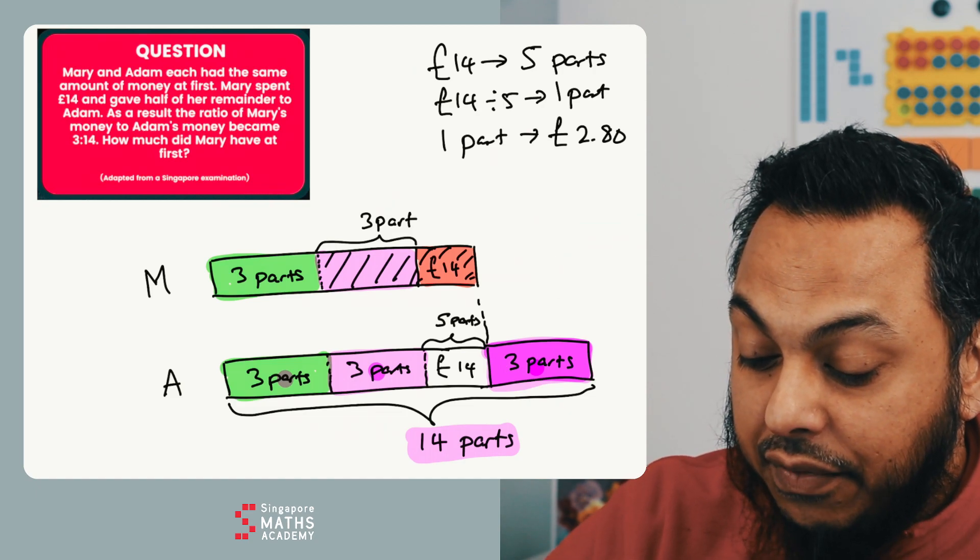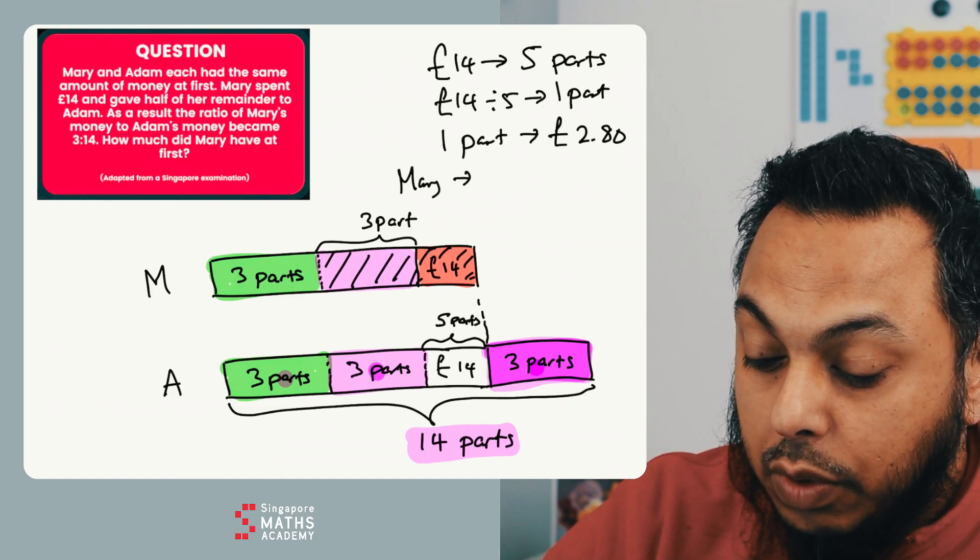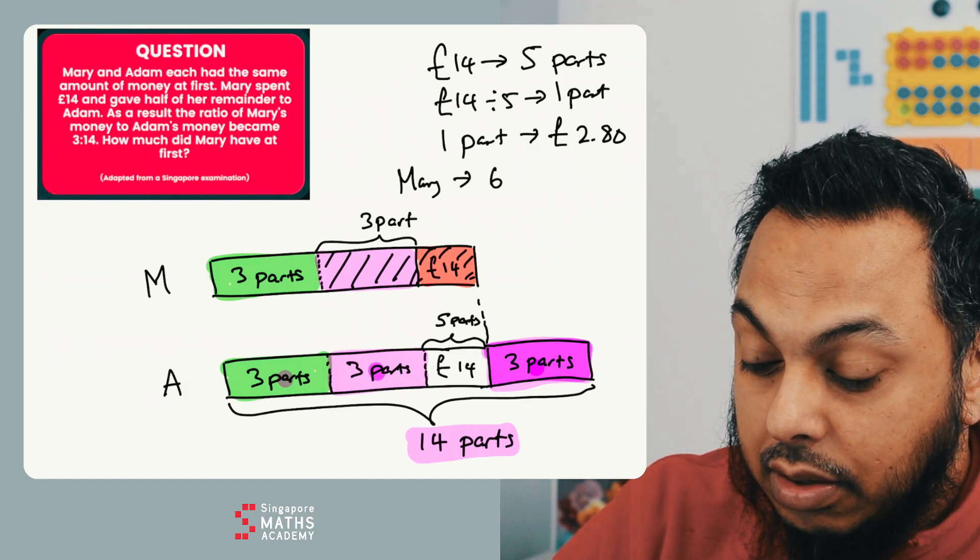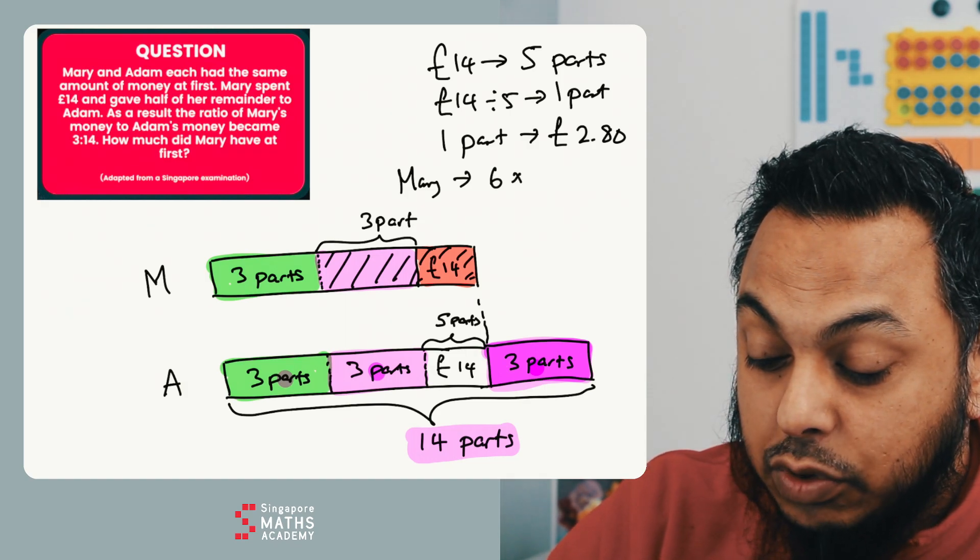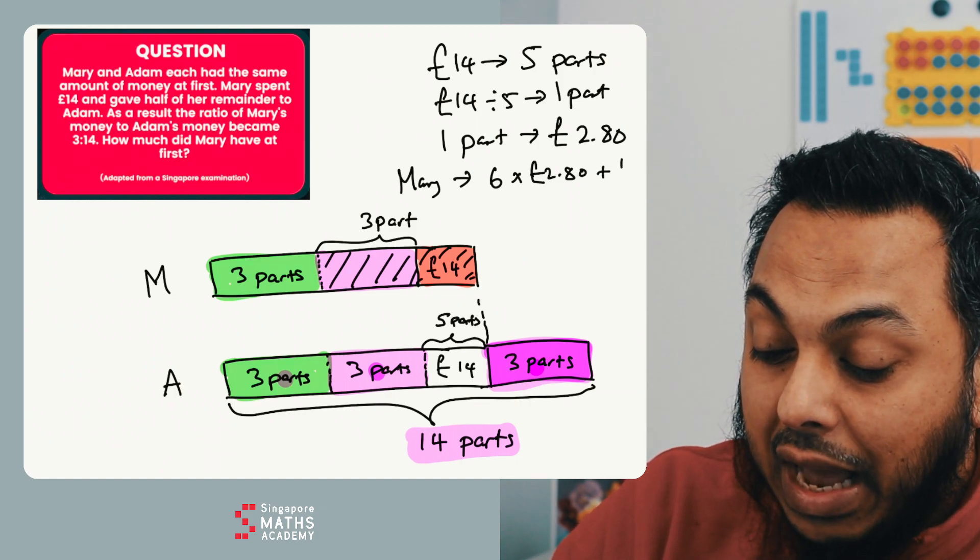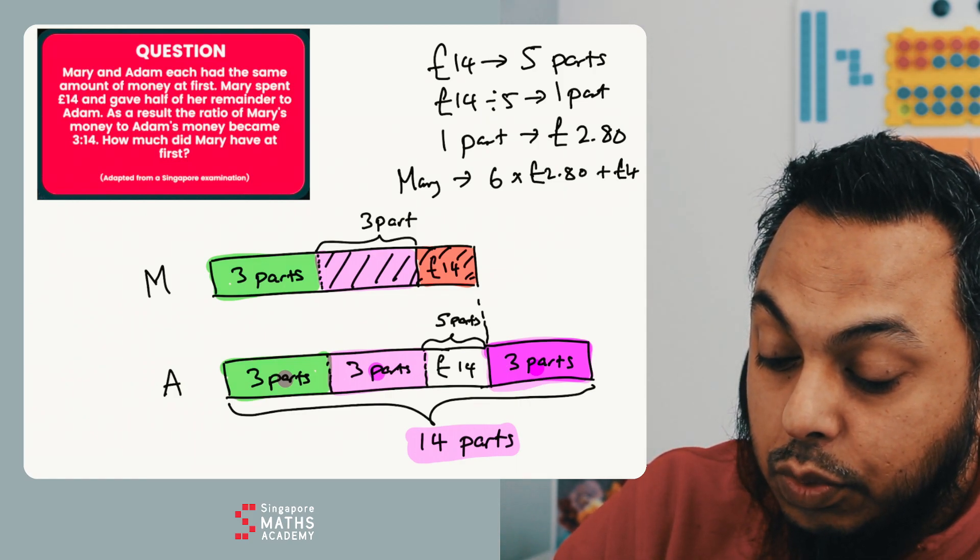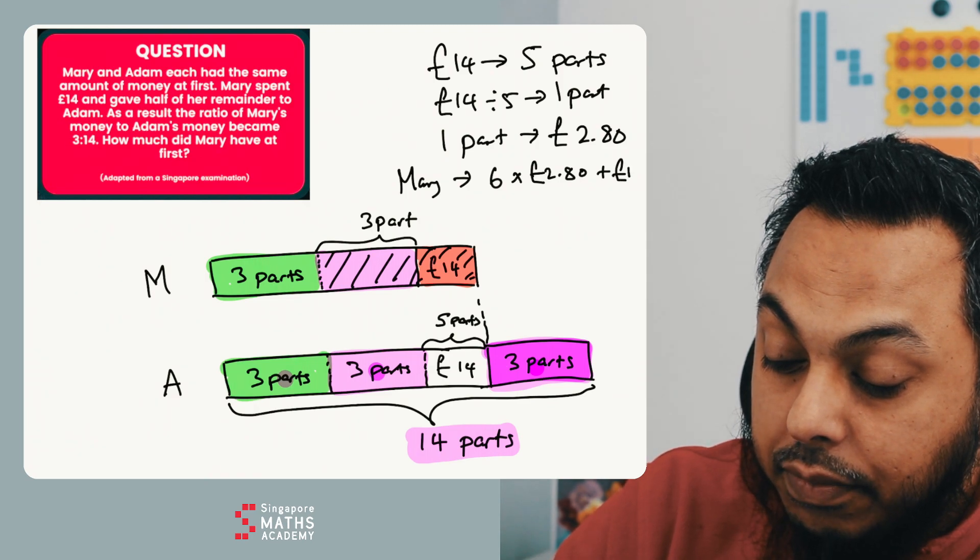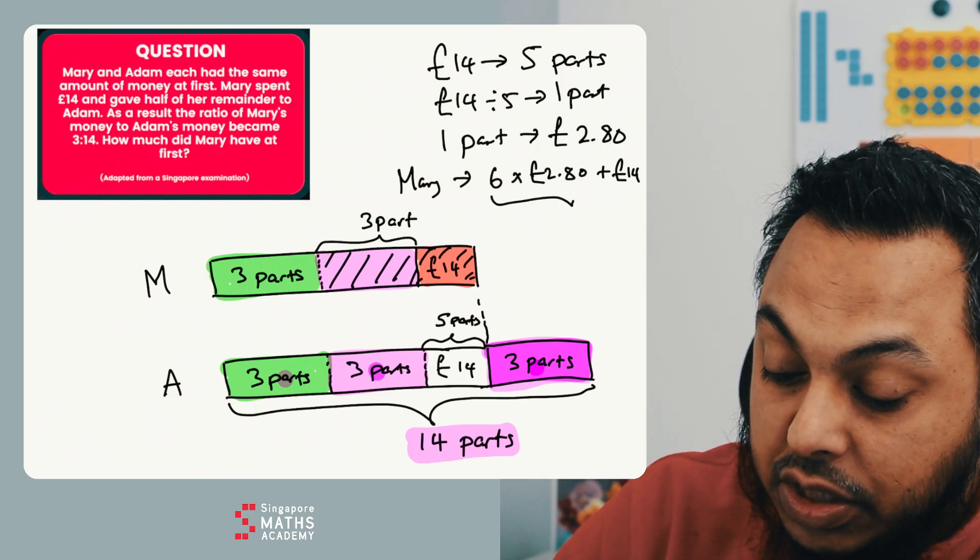In order for me to work out how much Mary had at first, I'm going to need to work out what six parts is, equal to six times £2.80, because I know each part is £2.80. And then I'm going to have to add the £14 which was spent as well. That will tell me how much Mary had at first.